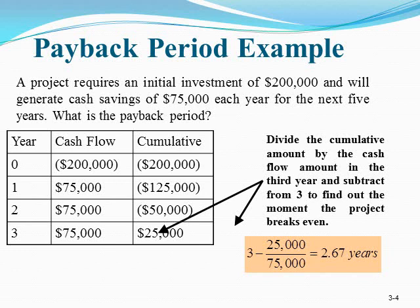The initial investment I₀ is equal to $200,000, which we consider negative because it is an investment. Starting from year one, we earn $75,000 in cash savings each year over five years. So at year zero we have minus $200,000, and from years one through five we add positive $75,000. We track the cumulative cash flow to find where it first becomes positive.